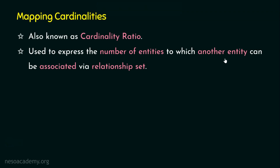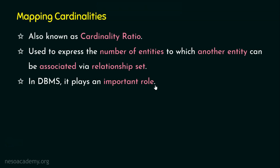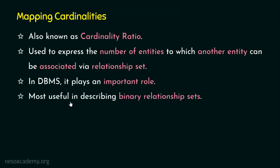When we see examples, you will be able to understand more clearly. In DBMS, mapping cardinalities play an important role — the relationship and association between entities is purely depending on the mapping cardinality. Mapping cardinalities are most useful in describing binary relationship sets. A binary relationship set is formed when two entities have a relationship between them.